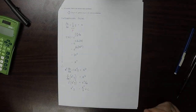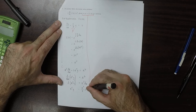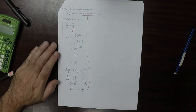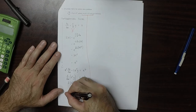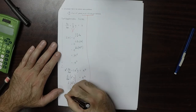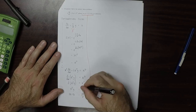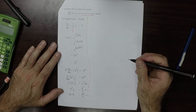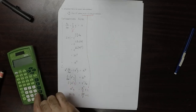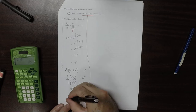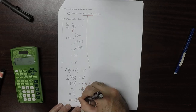We can figure out that constant using the initial data. When we plug in x=2, y=12, that should be a solution. So 2^5 times 12 equals 2^7/7 plus c, which is 32 times 12 equals 128/7 plus c, so 384 minus 128/7 equals c. Combining into a single fraction: 384×7 minus 128 over 7, giving c = 2560/7.